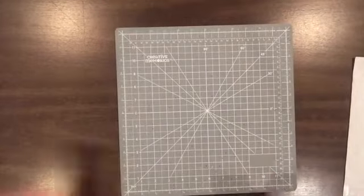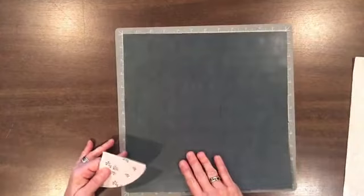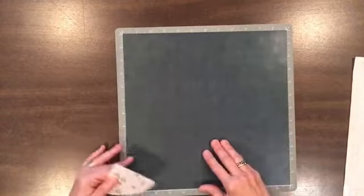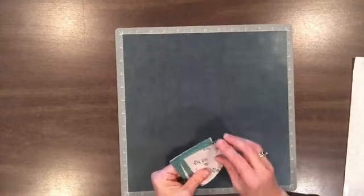Now what you want to do is select a background paper. I've selected this nice deep green from the Art Nouveau collection and we're going to start laying out our pieces.